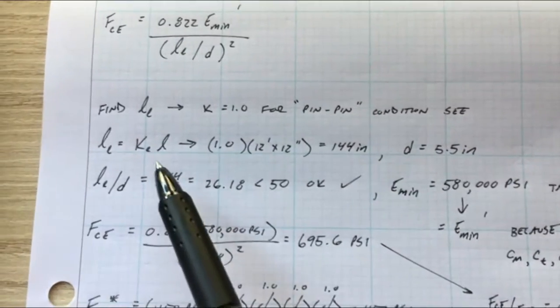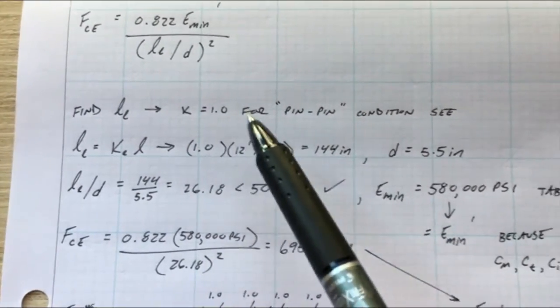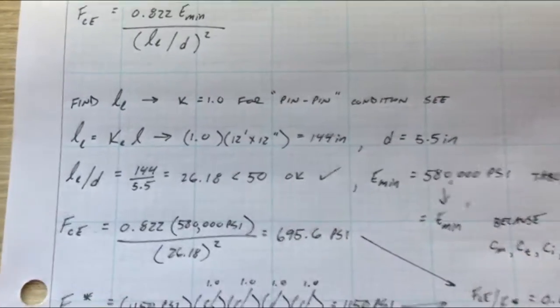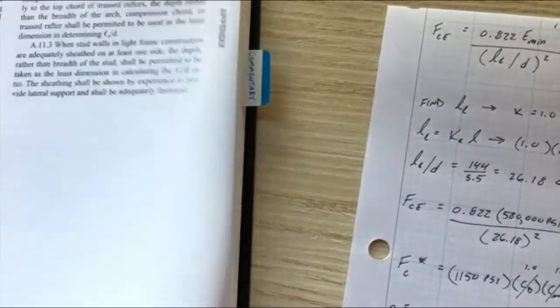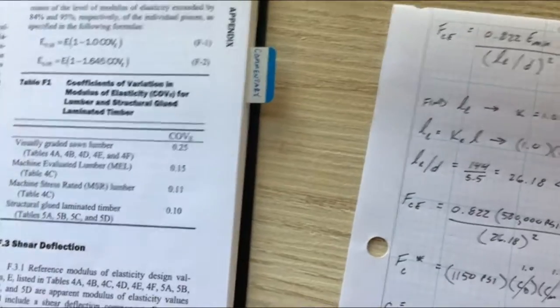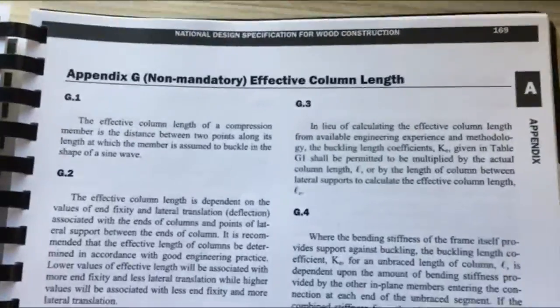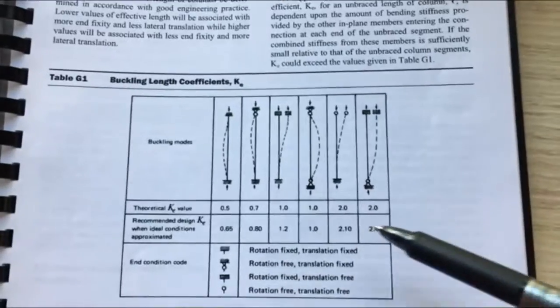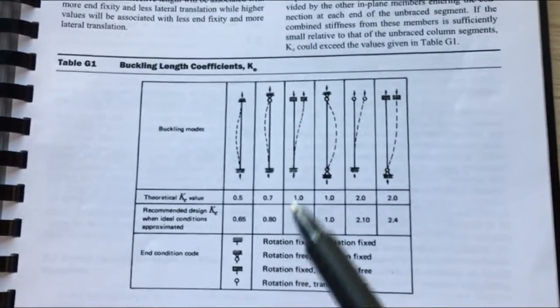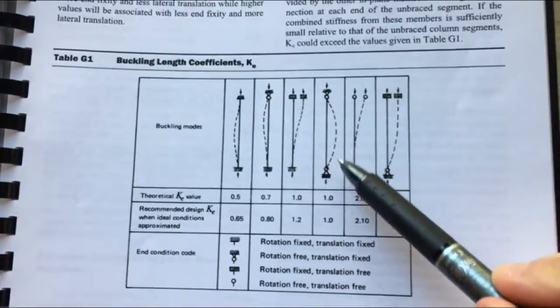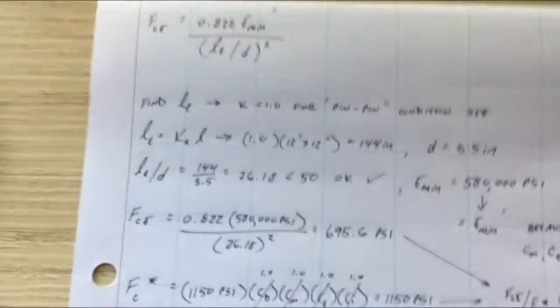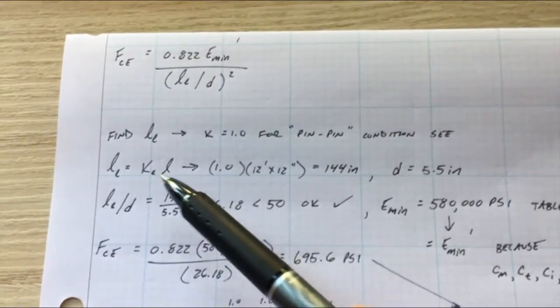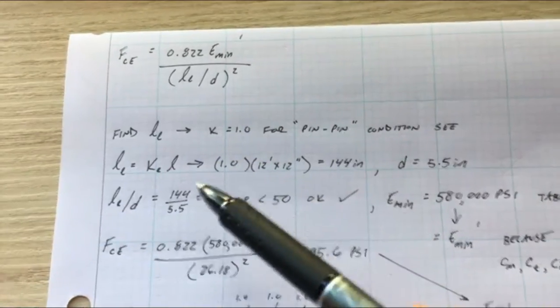So LE is KE times L and that K factor is 1.0 for a pin pin condition. I say C and I don't put anything but that's actually back in the appendix. Let me see on the spot if I can go get it for us. Yes, okay so in appendix G that's this table here and we have a pinned pin condition and that's 1.0 for your KE value. So that makes it easy, so LE just equals your length which was 12 feet times KE which is 1.0. Convert that into inches, that gets you 12 feet which is 144 inches.